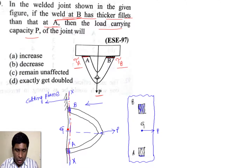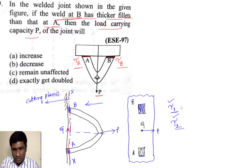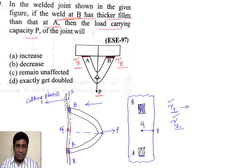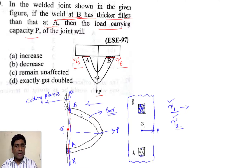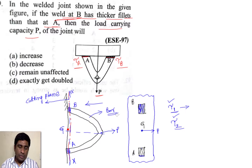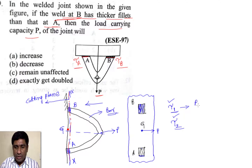For welded joints like these, we have two types of shear stresses: tau_1 and tau_2. The primary shear stress tau_1 is due to the direct applied load P, and it is simply the force divided by the area of the cross-section. The shearing area is the cross-section exposed by the cutting plane. For convenience, I assume a rectangular bar, so the cross-section is rectangular.